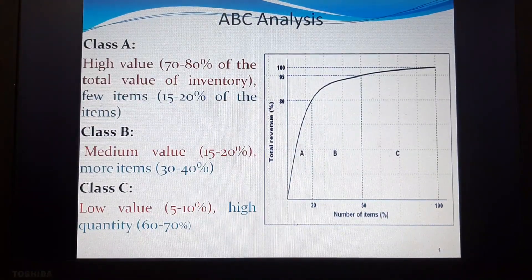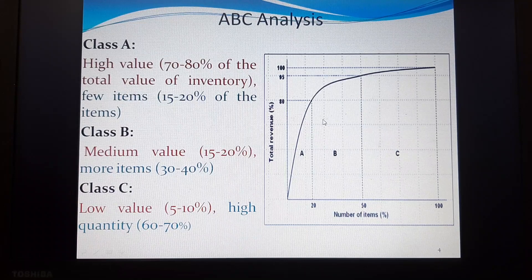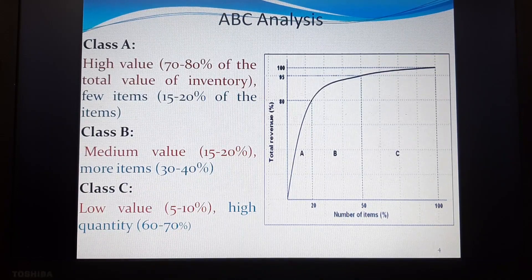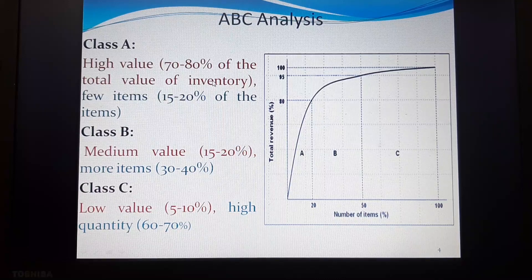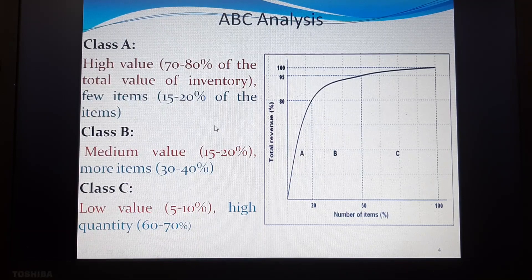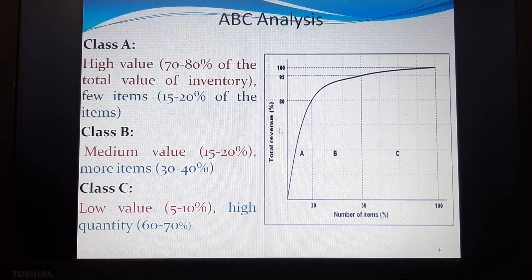This is one of the major graphs normally adopted in ABC analysis. We divide inventory into three classes: Class A, Class B, and Class C. Class A has higher value — about 70 to 80 percent of the total value of inventory lies in only 10 to 20 percent of the items. You can see that the number of items is almost 20 percent, yet they account for about 80 percent of the value.